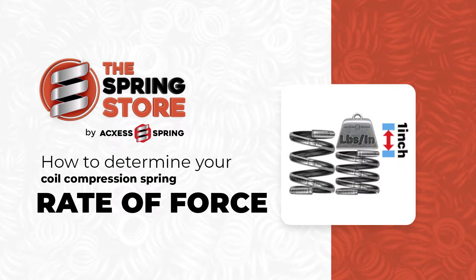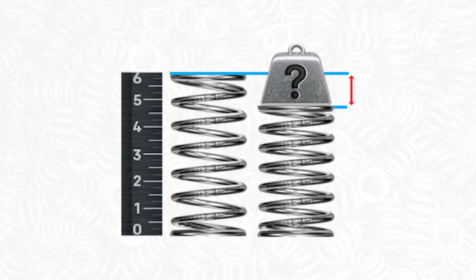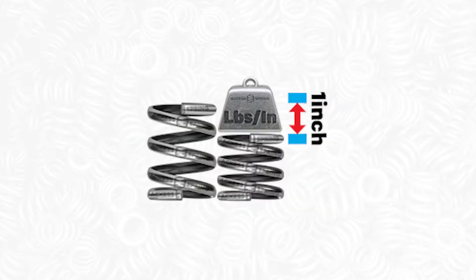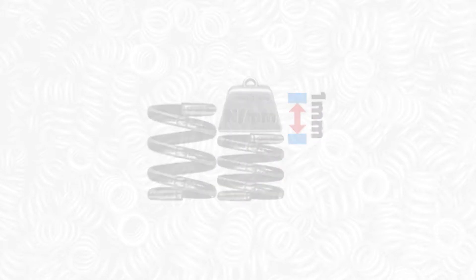How to determine your coil compression spring's rate of force. Spring rate is a measurement of the amount of force needed to compress a spring a particular distance. It is measured in pounds per inch or newtons per millimeter.